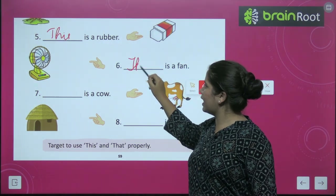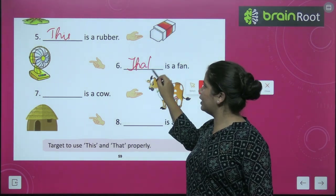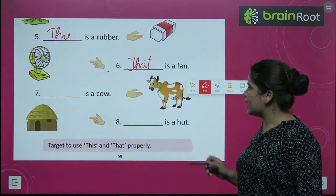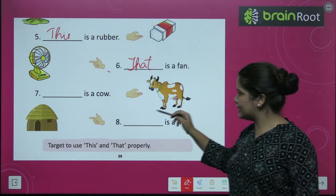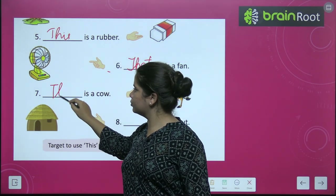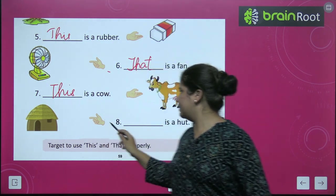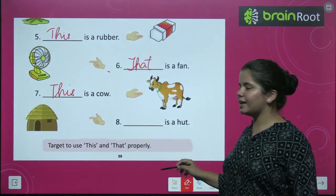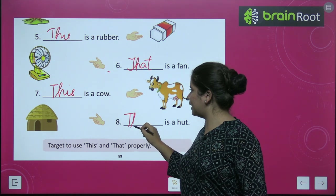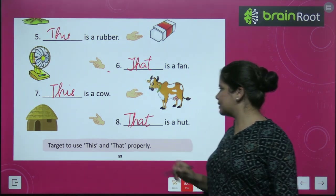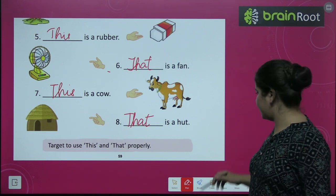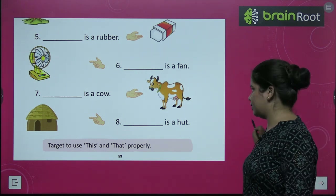That is a fan — क्योंकि यह hand से दूर है. डाश is a cow — this is a cow. डाश is a hut — यह hand से दूर है ना, तो अभी आप क्या लिखोगे बच्चों? That is a hut. ठीक है, सब को समझ आ गया? Very good.